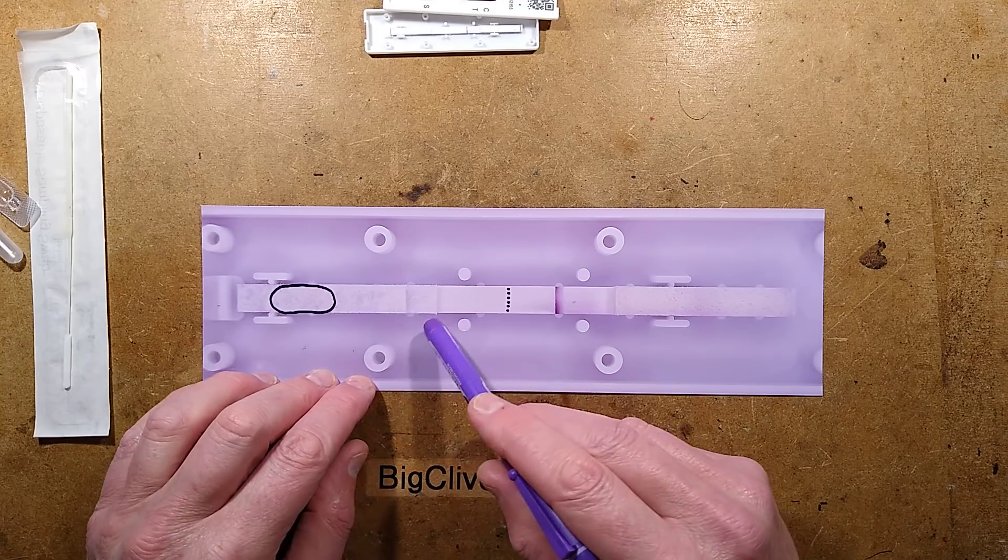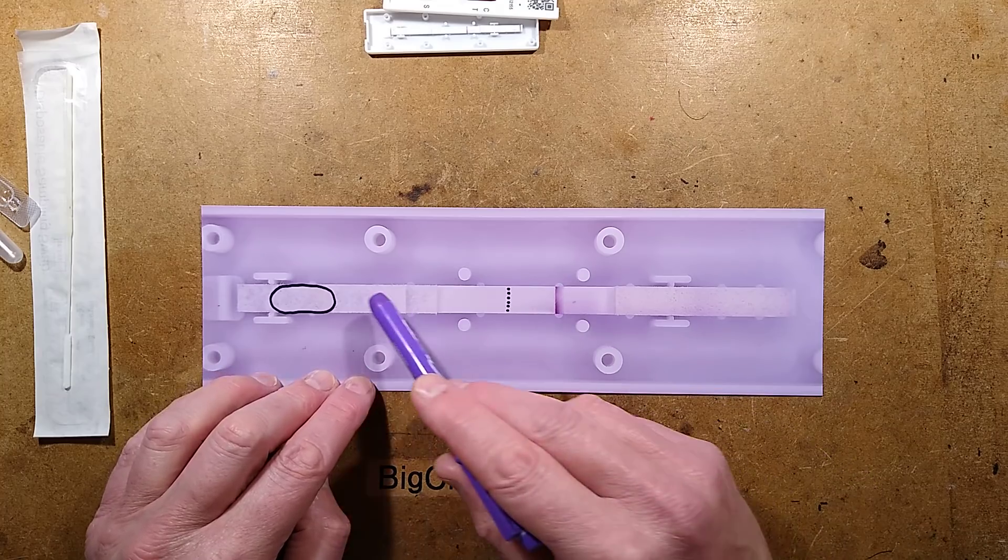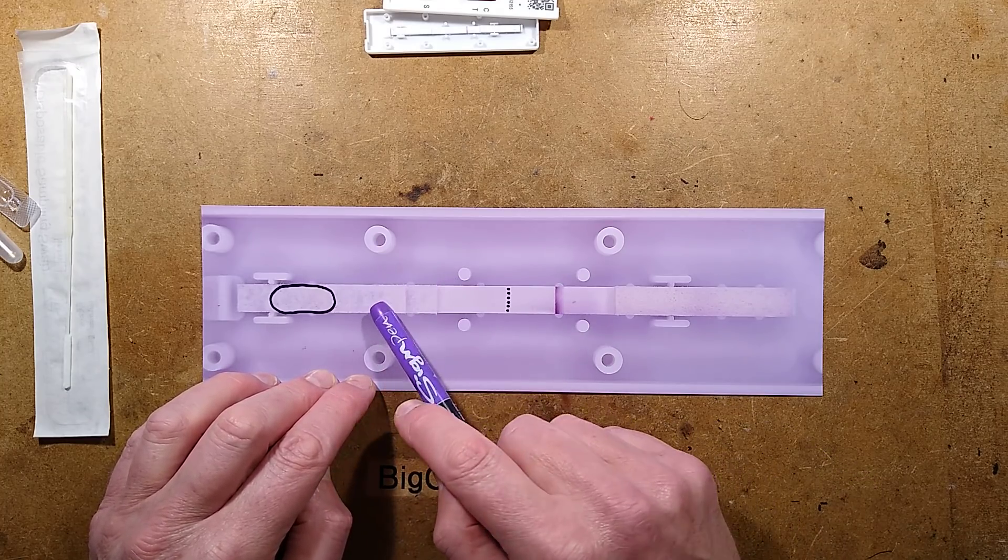But they've got other versions of these that can do multiple tests at once. So you can actually have a whole load of lines that as a liquid passes it will run a whole load of tests.